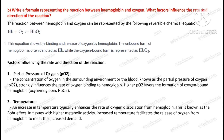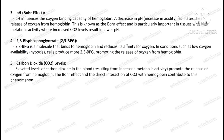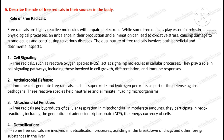Second part of question five: write a formula representing the reaction between hemoglobin and oxygen — what factors influence the rate and direction of the reaction. Question number six: describe the role of free radicals and their sources in the body.